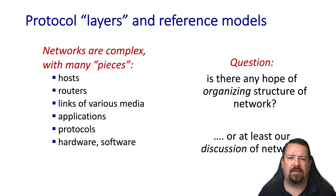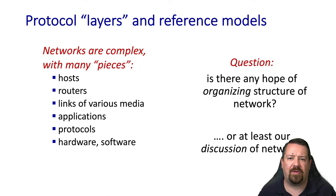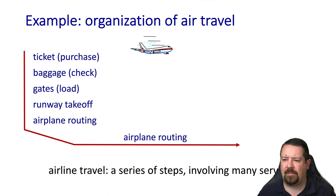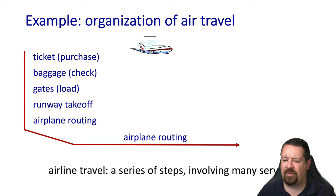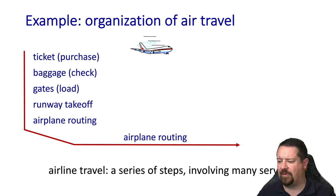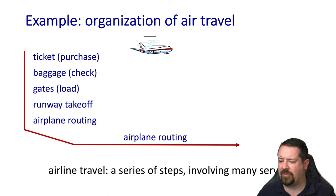Let's try applying the layering organization to air travel. Air travel is also a complex operation involving many steps. On the departure side, it begins with purchasing a ticket, then checking baggage, arriving at the gate to load on the aircraft, taking off from the runway, and a routing operation that may continue at multiple increments along the aircraft's path. Then on the arrival side, we effectively reverse the process.